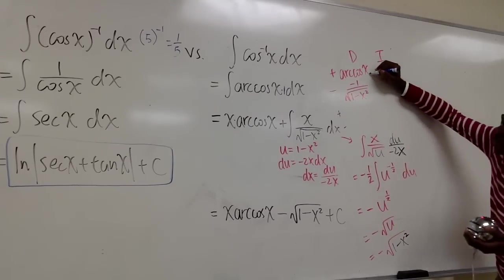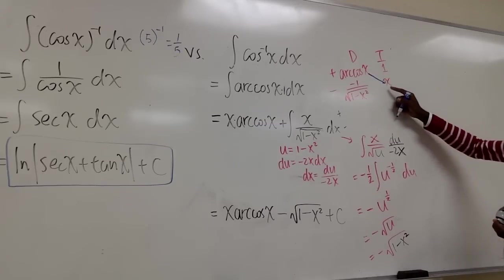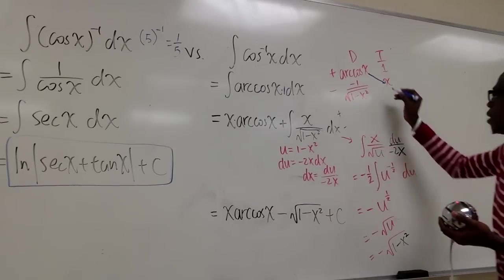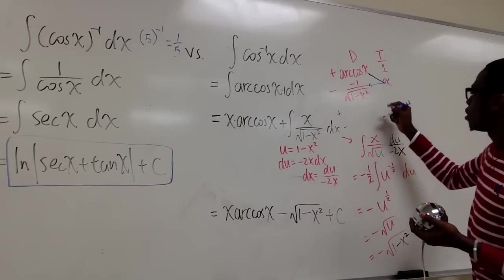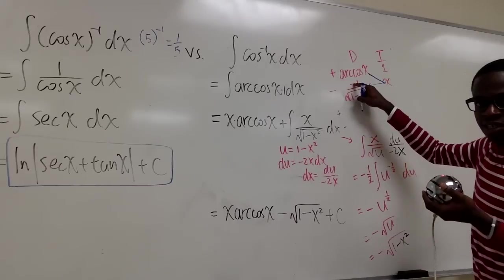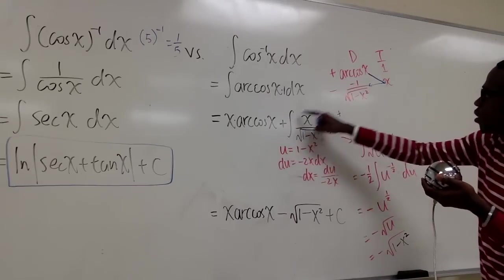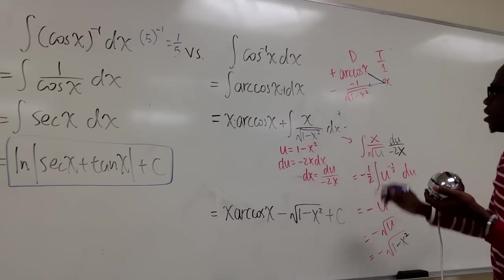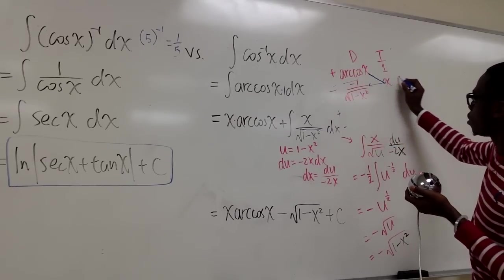So we multiply this way. And we're going to have x times arc cosine of x. And then we multiply this way as well. Negative times a negative is a positive. 1 times x is x over radical 1 minus x squared dx. And we take the integral of this component.